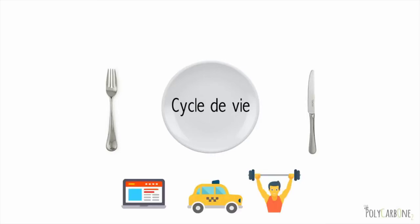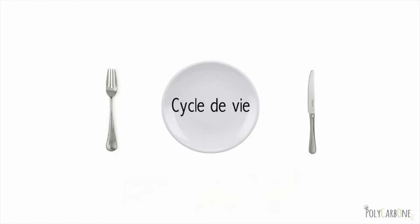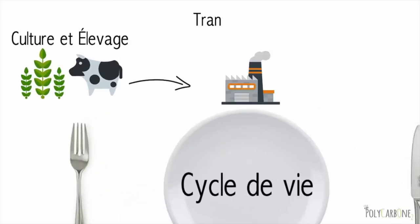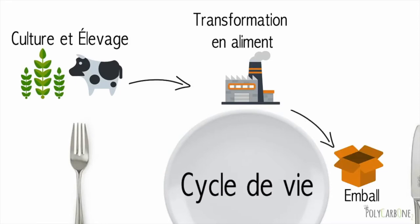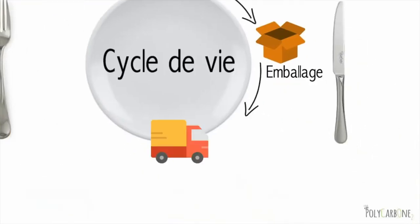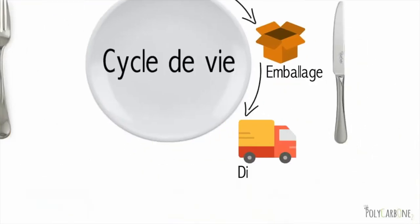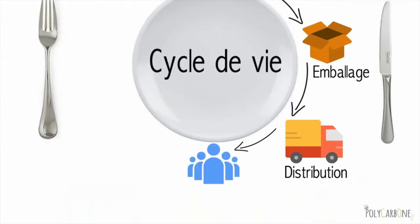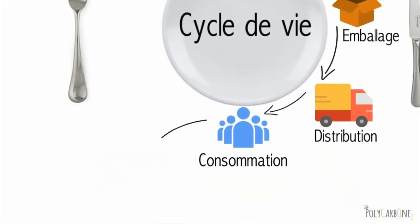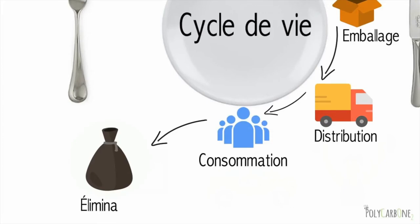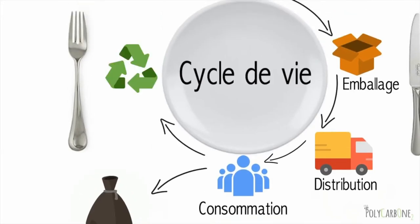un service ou un comportement. L'ensemble des étapes du cycle de vie de notre régime alimentaire sont tout d'abord la production agricole, c'est-à-dire la culture et l'élevage, la transformation en aliments, l'emballage de ces aliments, la distribution des aliments qui inclut leur transport, la consommation des aliments qui inclut le fait de les cuisiner, et enfin le traitement des déchets, soit en les éliminant, soit en les valorisant.